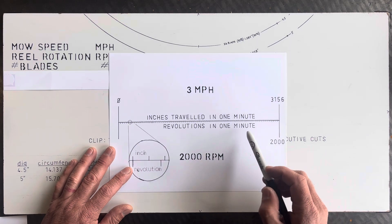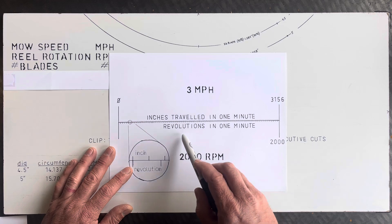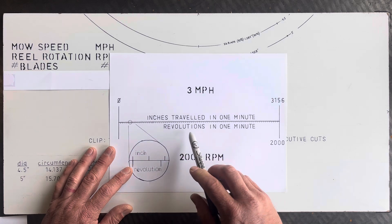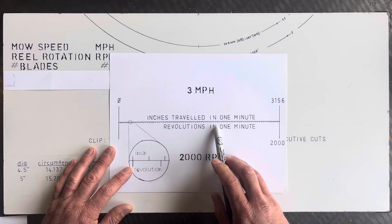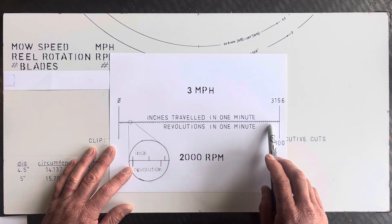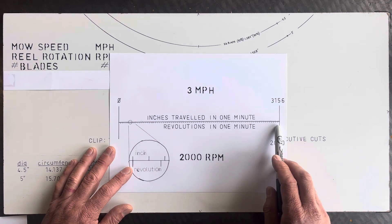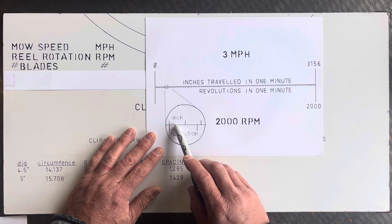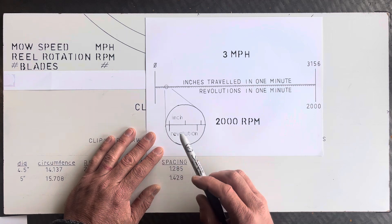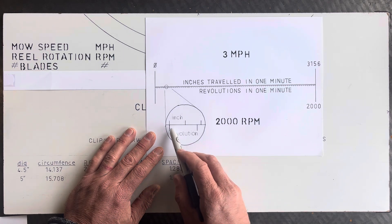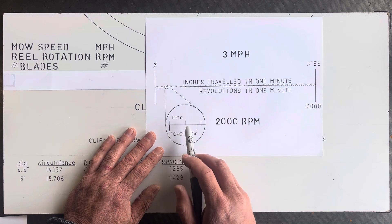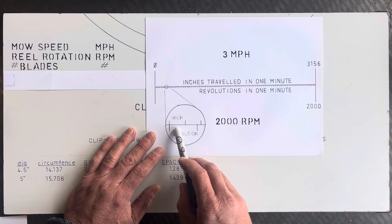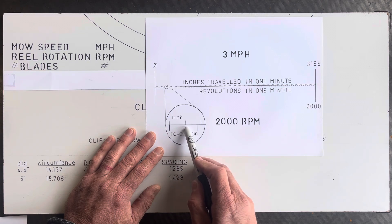In that same minute, if the reel is rotating at 2,000 RPM, it will complete 2,000 rotations over that same distance. Zooming in, we can see that for every inch of travel the reel rotates not quite one full revolution.